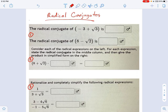What you do is, like with a complex conjugate if you've seen those before, you simply flip the sign on the radical part. So the radical conjugate of negative 3 plus radical 3 is negative 3 minus radical 3.